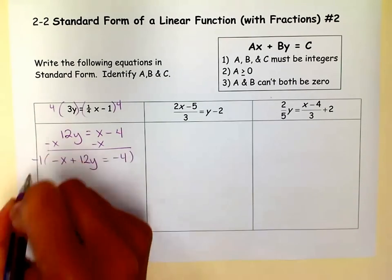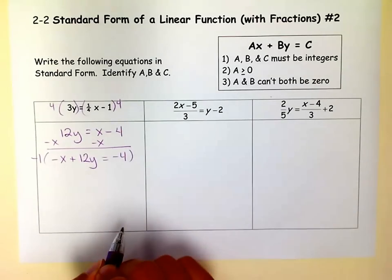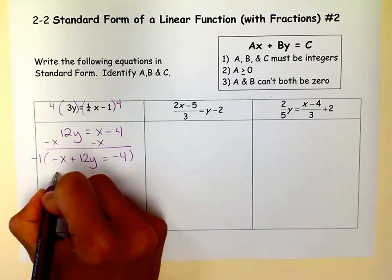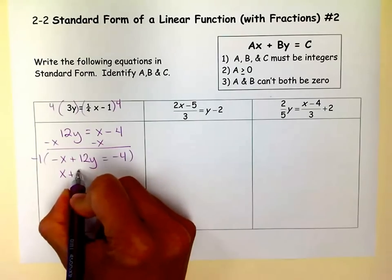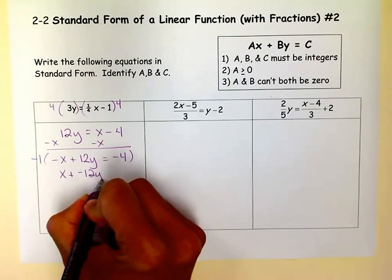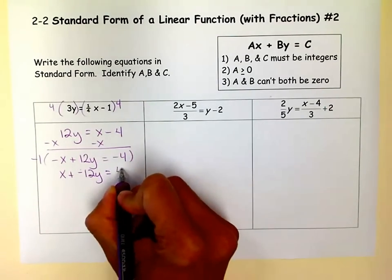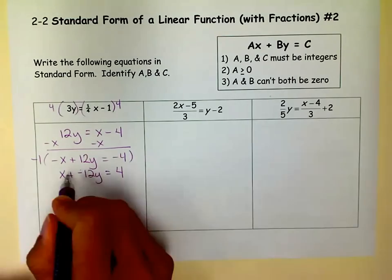And how I can do that easily is just to multiply the whole equation by negative 1. So negative 1 times negative x is x. Negative 1 times 12y is negative 12y. And then negative 1 times negative 4 is 4. And this is in standard form.